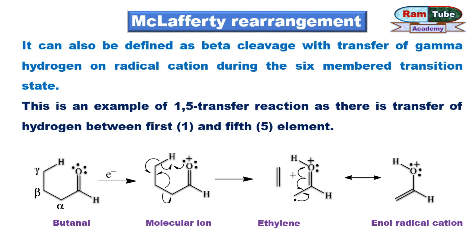This reaction can also be defined as beta cleavage with transfer of the gamma hydrogen on the radical cation during a six-membered transition state. It is also an example of a 1,5 hydrogen transfer reaction, as there is transfer of hydrogen between the first and fifth elements.